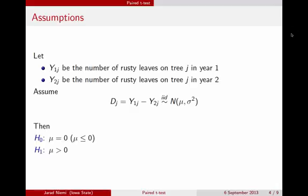We can rewrite the hypotheses that we have. The alternative here is that mu is greater than zero. That is, we expect more rusty leaves in year one than we do in year two. And the alternative is the opposite of that, which we can write either as mu less than or equal to zero, or as mu equal to zero. It turns out that mathematically, this will be equivalent.